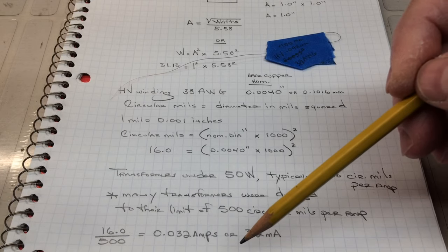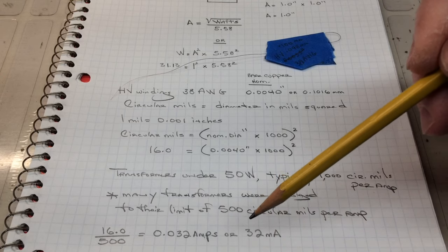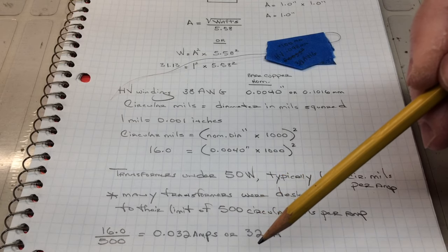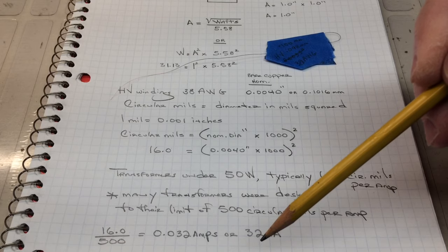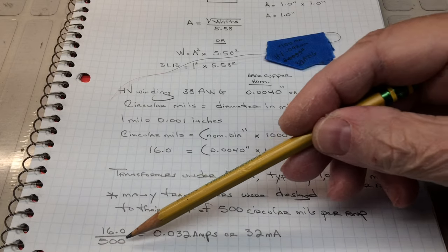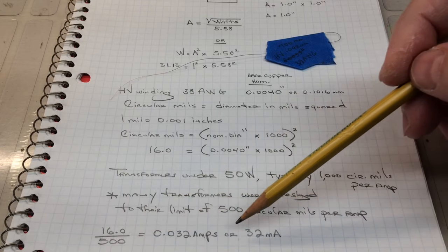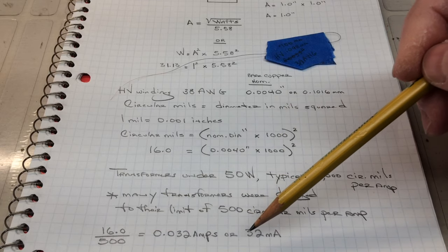Another rule of thumb, and I'll touch on that in just a second, is 2,000 amps per square inch. And that number will get us back to the same result. Let me share that now.